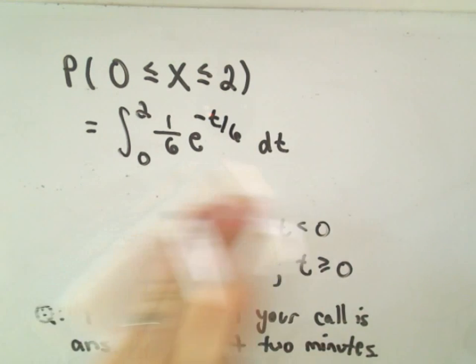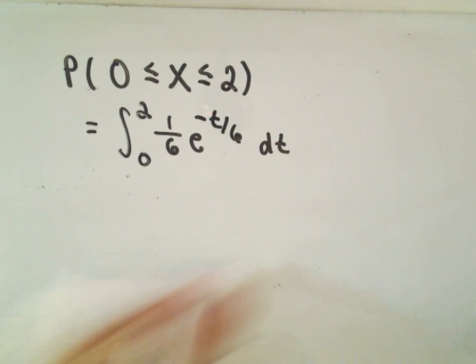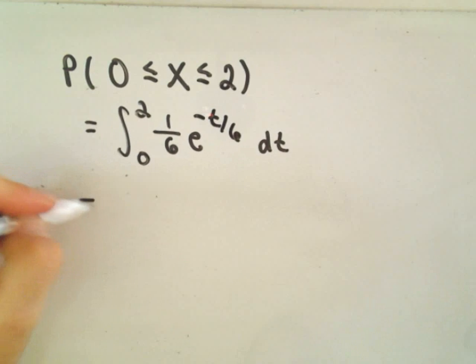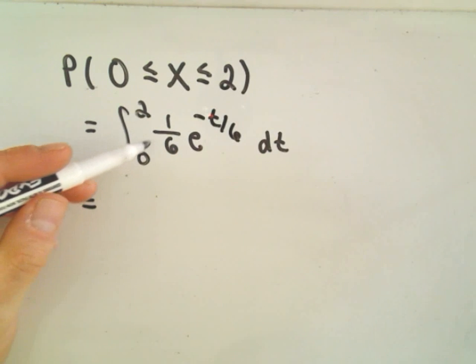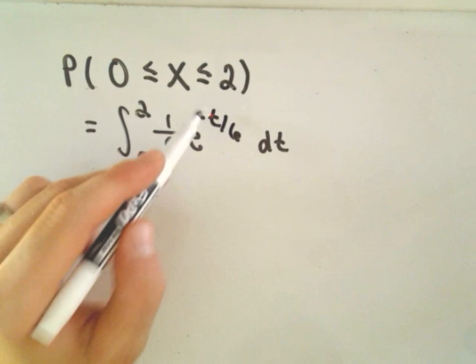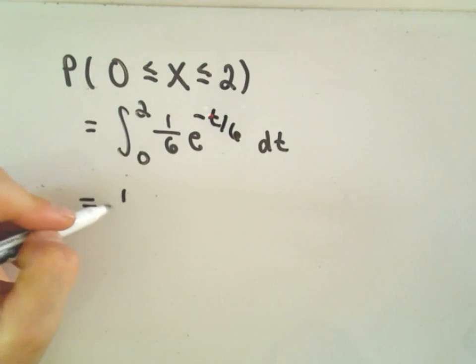So that would be the function that we have to integrate. Okay, so in this case, I'm not going to go through all the details of the integration. So this is just integrating an exponential function. You could do a u-substitution. So when we integrate, we could pull the one-sixth out front.